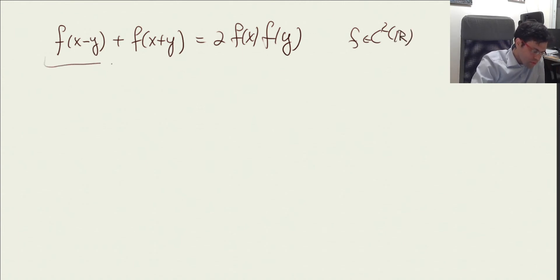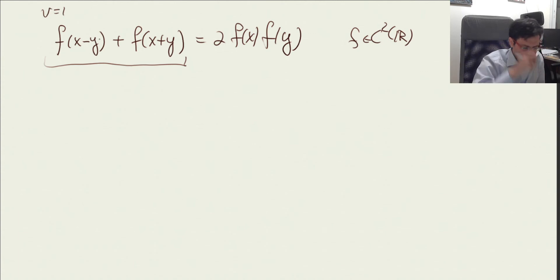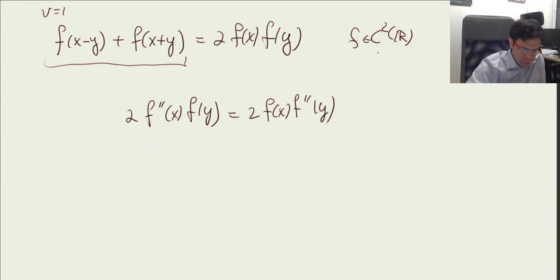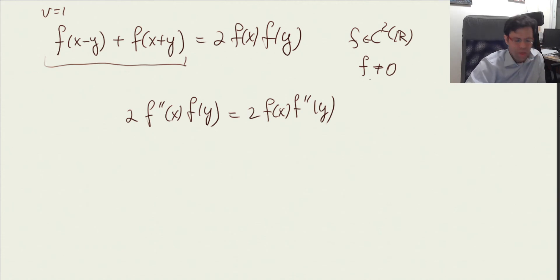This is a valid solution to the wave equation where x plays the role of x, velocity is 1, and y plays the role of time. Therefore we can conclude that 2f''(x)·f(y) must equal 2f(x)·f''(y). We're interested in non-trivial solutions — f equals zero is a solution, so we want non-zero solutions, or at least those for which f is non-zero on at least some interval.